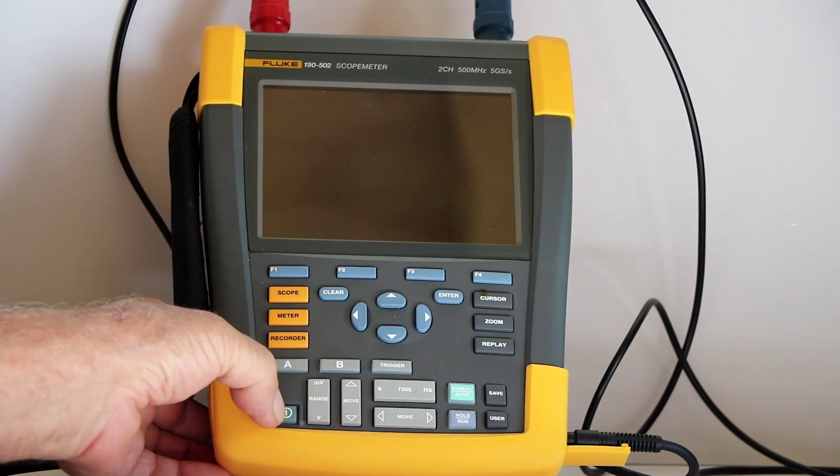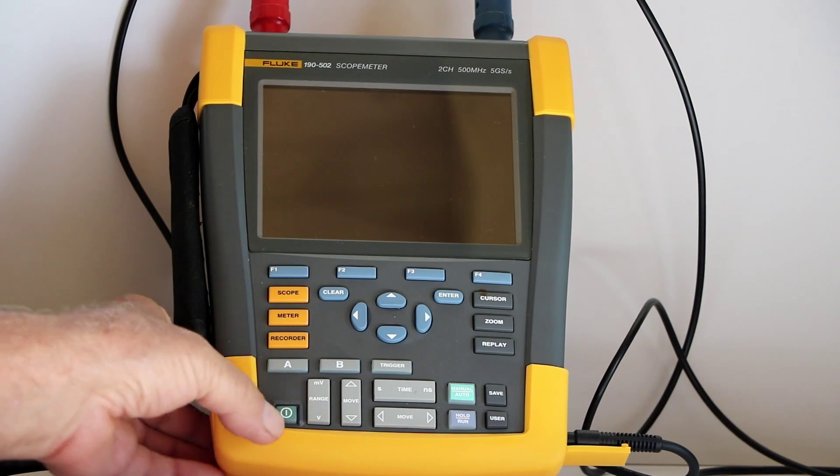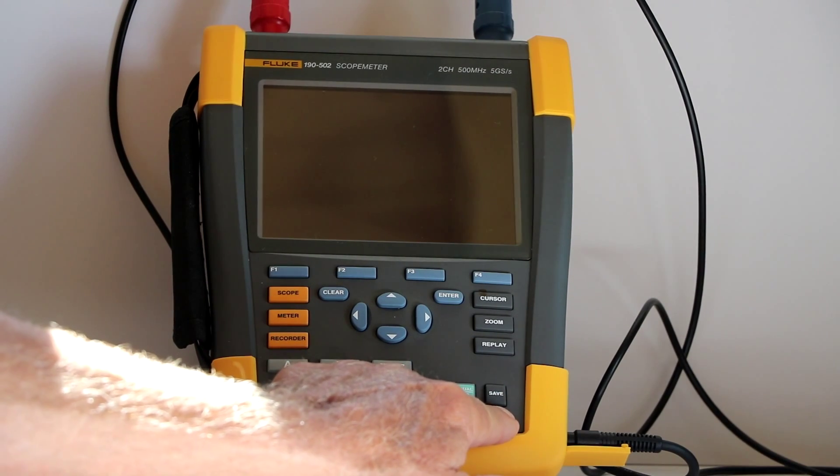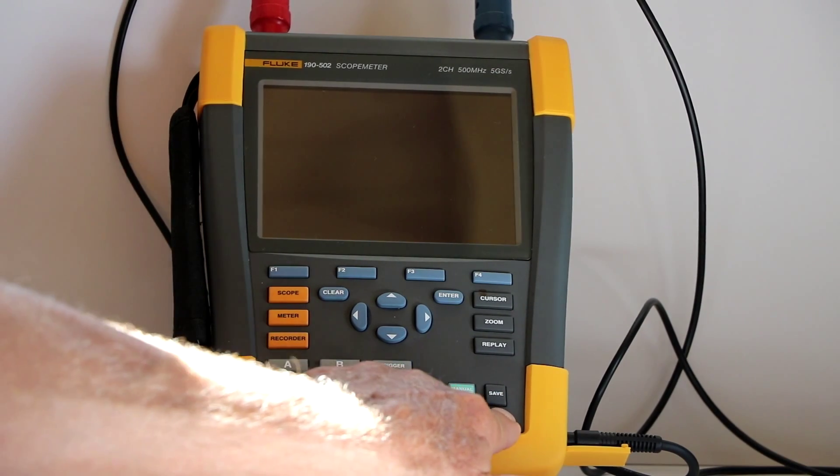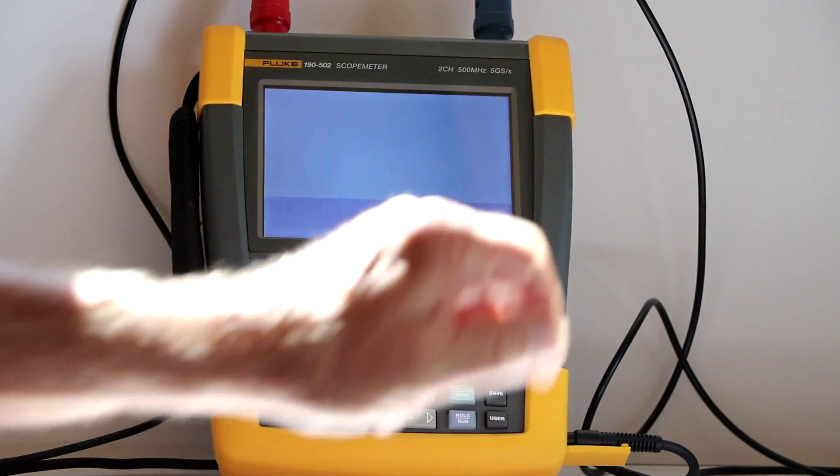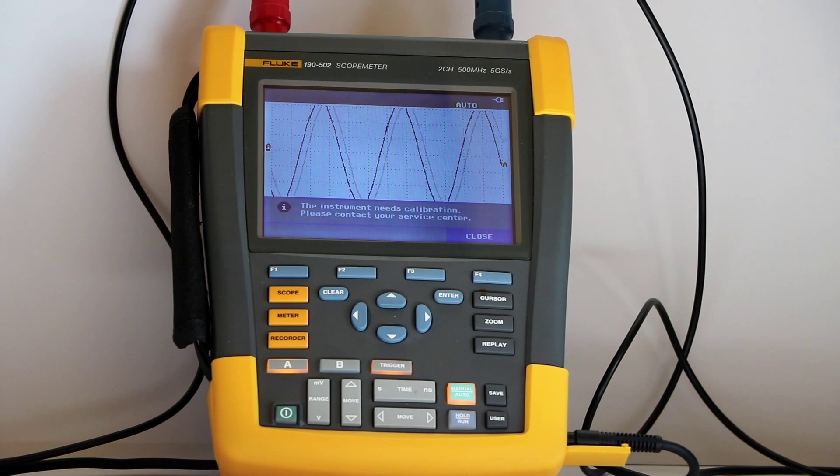After the screen darkens, press and hold the user key. Then, press and release the power key. Finally, release the user key. This returns the instrument to the factory settings.